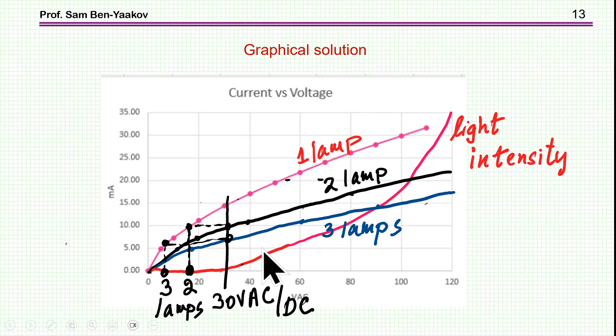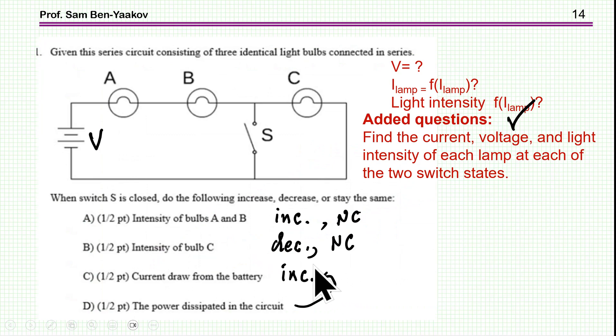Now, knowing this, we go back to the question. So the first question is, if the intensity of bulb A and B increasing, decreasing will stay the same? Well, it depends on the voltage. It could increase, and it could stay the same if the voltage is low.